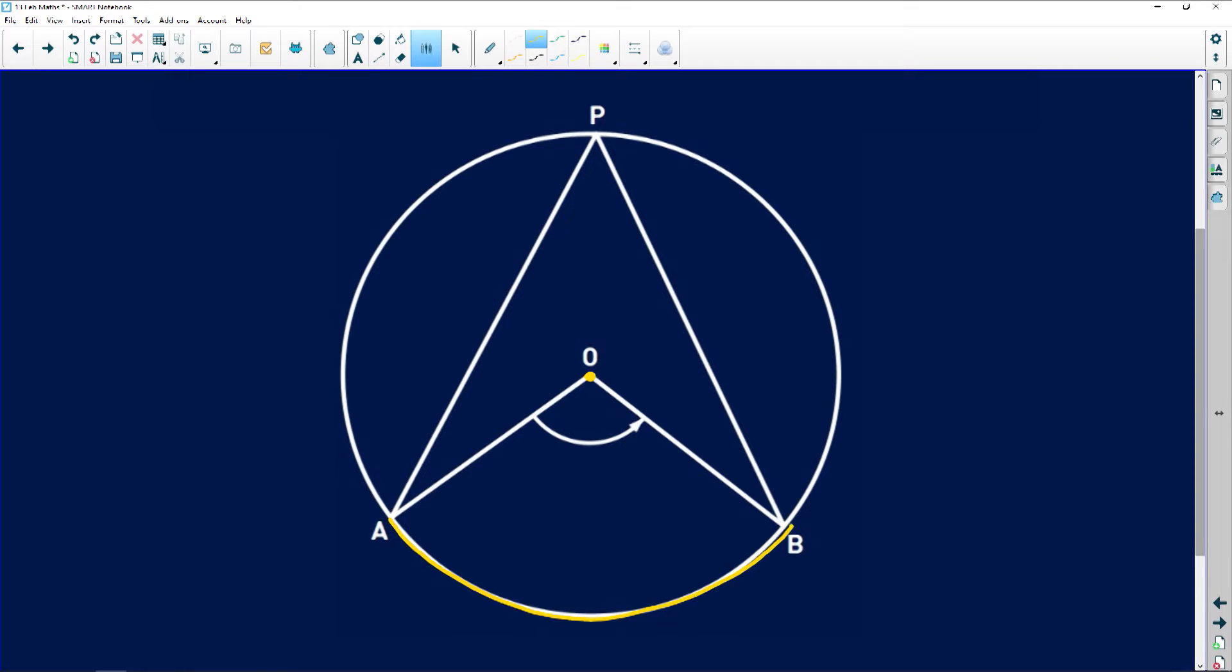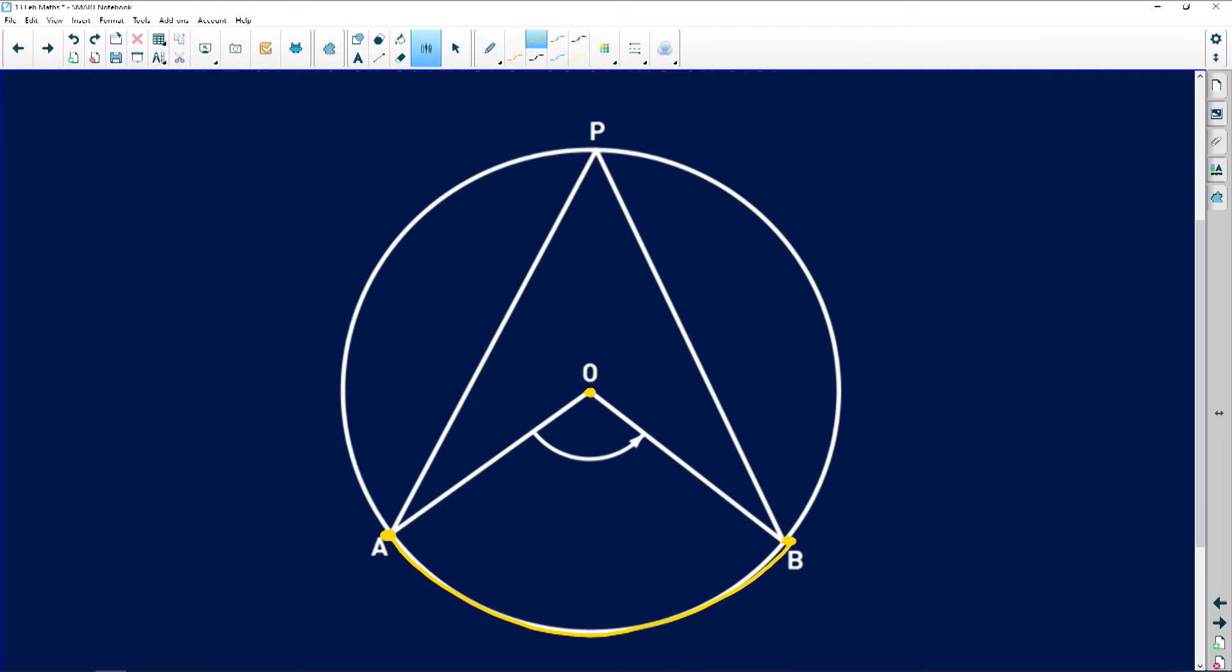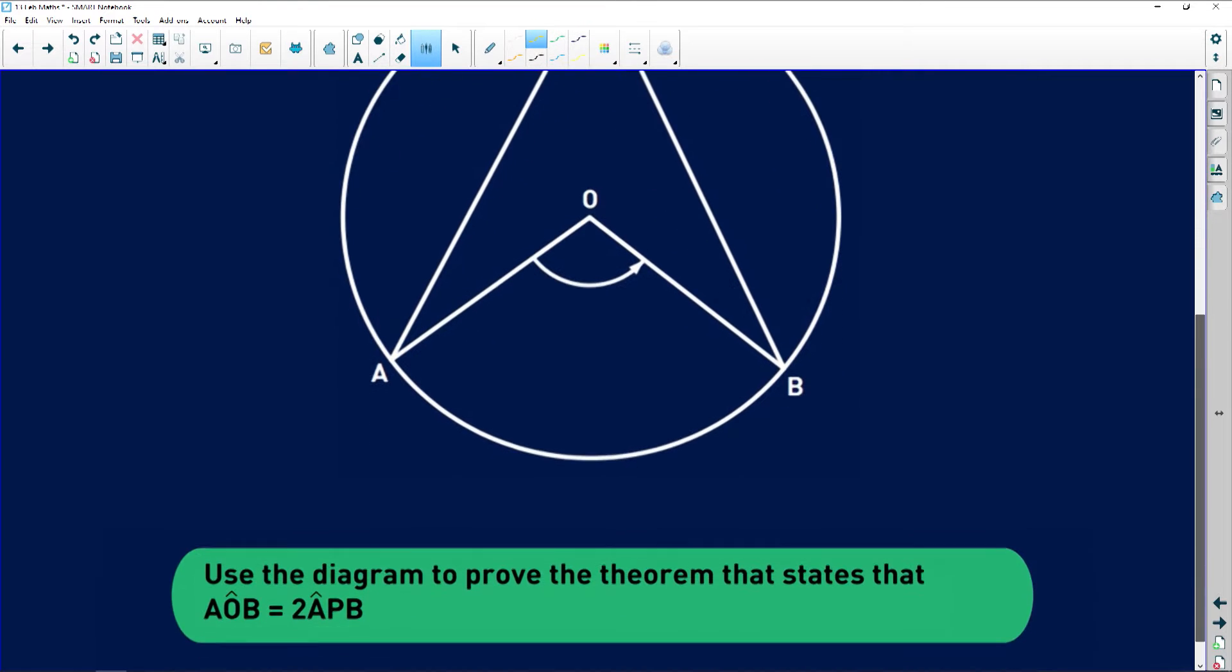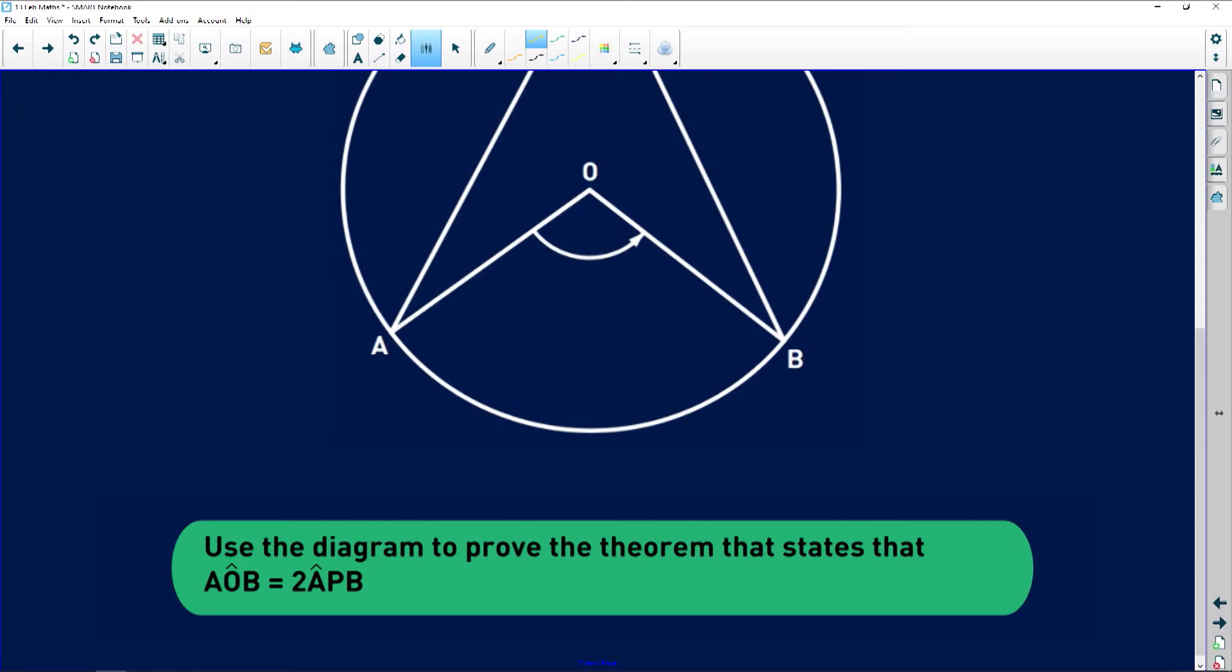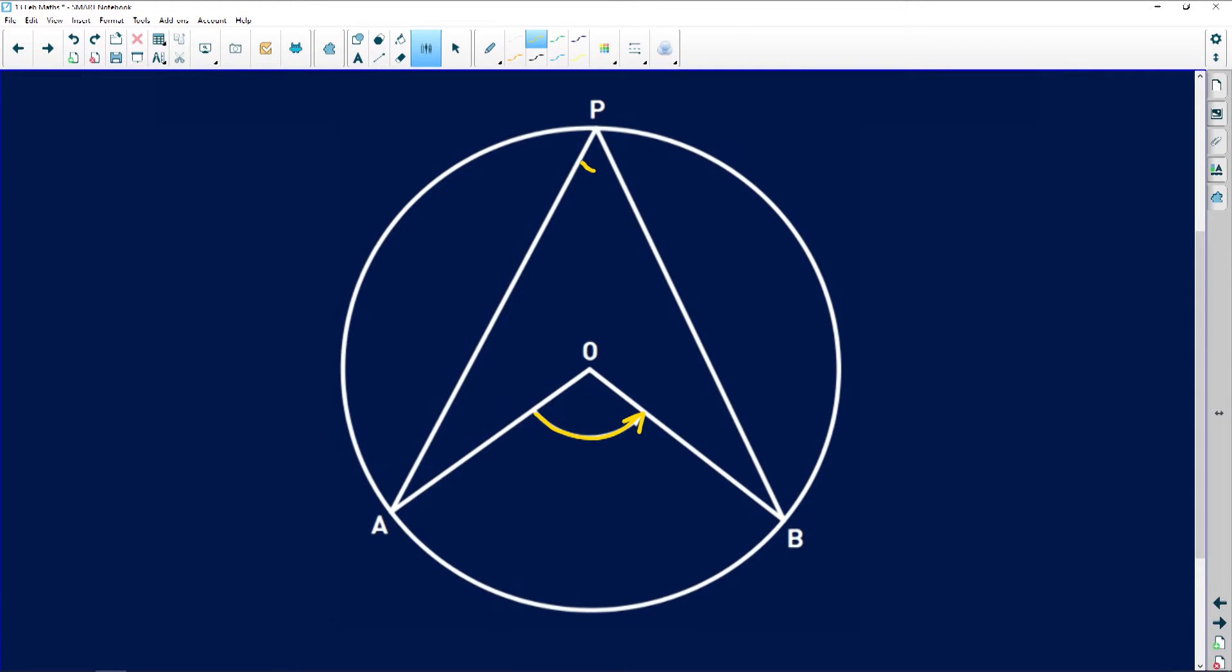It subtends angle AOB at the center of the circle and APB at the circumference of the circle. Odds are you're going to prove angle at the center is equal to twice angle at the circumference. It says use the diagram to prove the theorem that states that this angle over here is equal to twice APB, which is this angle at the circumference.